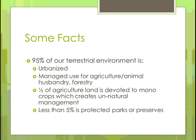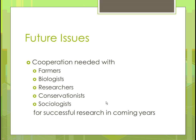Some facts to wrap up: 95% of our environment is urbanized — non-farming — managed for the use of agriculture, animal husbandry, and forestry. Half of our agricultural land is devoted to monocrops, which creates that unnatural management where we have to use fertilizers to keep it going, and we want to make it more sustainable. Less than 5% of our land is protected as parks or preserves — that's an ecosystem that provides a lot of beneficial insects. There's not much out there, so we need to make sure we don't lose what we have.